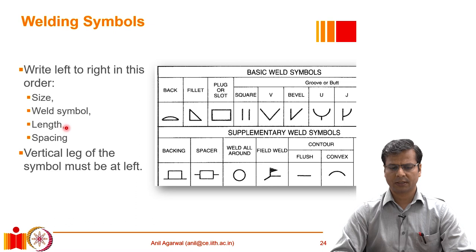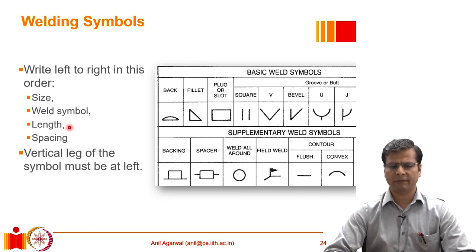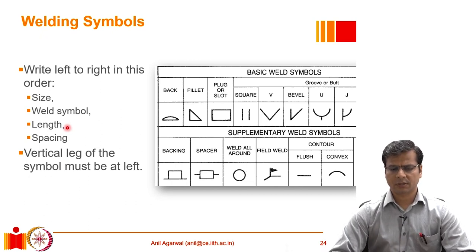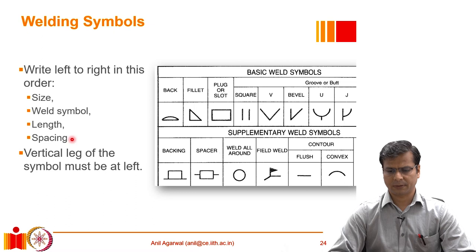Subsequent to that, we mention the length of the weld if it is not the full length of the member. If the weld runs throughout the length, we do not need to mention it. If it is an intermittent weld, we then also mention the spacing. All other symbols are provided on that same arrow.